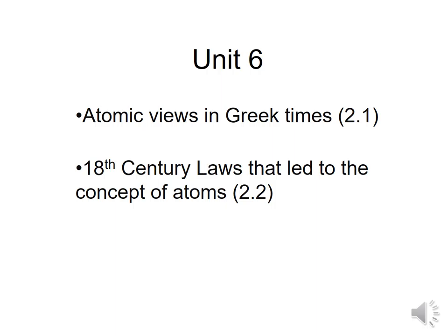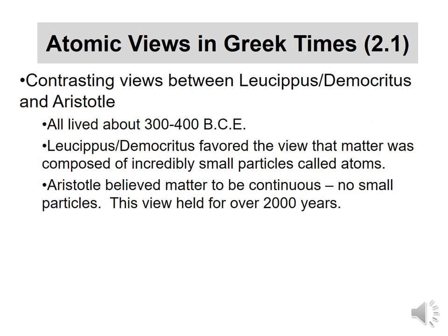In Greek times — around 300 to 400 BC, roughly 2,400 to 2,500 years ago — there were a couple of contrasting views of what matter was made of. There were Leucippus and Democritus (Leucippus was actually Democritus's student), and there was Aristotle. Aristotle is well known; the others you've probably not heard of as much. All of these philosophers lived around the 300 to 400 BC era and were roughly contemporaries.